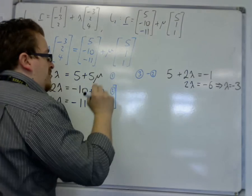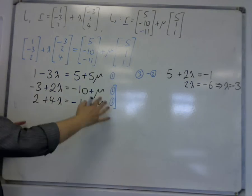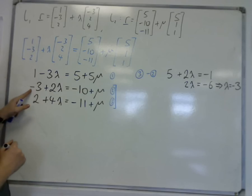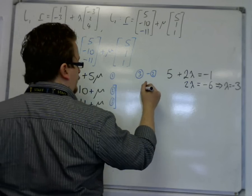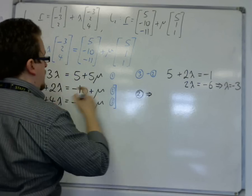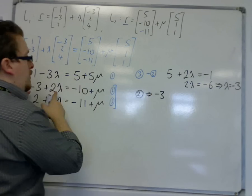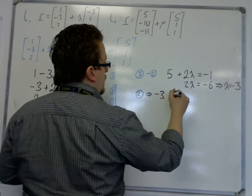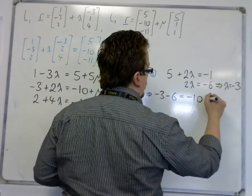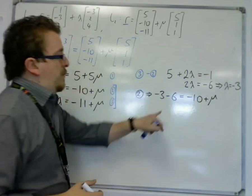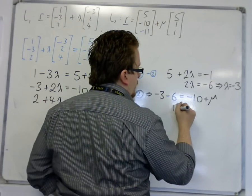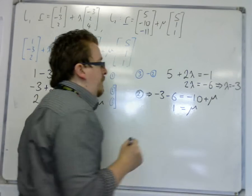I then substitute lambda is minus 3 into one of those two equations. So I'm going to choose equation 2. So in equation 2, I'm going to get minus 3 plus 2 lots of minus 3, so that's minus 6, is equal to minus 10 plus mu. So minus 3 take away 6 is minus 9, add 10 to it is 1. So mu is 1.